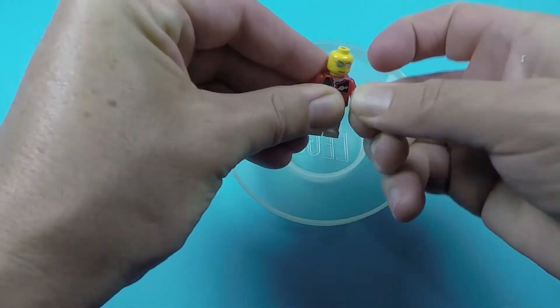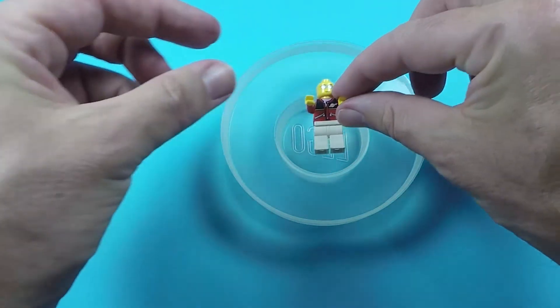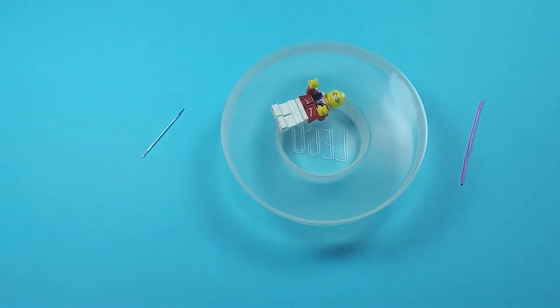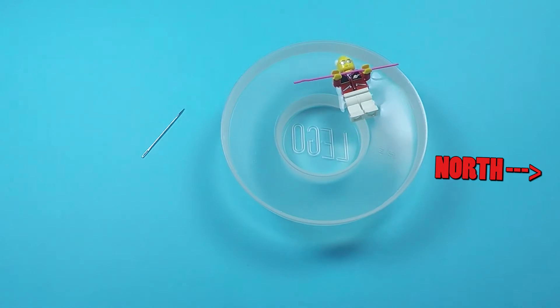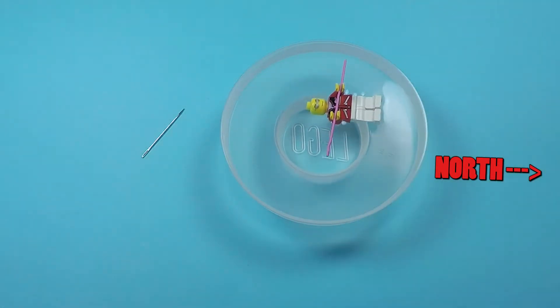Then we grab the minifigure and pop his arms up so that he can hold something. Now we just need to put the paperclip into the hands and watch him float around and point to North. It could take a little time, but he'll get there eventually.